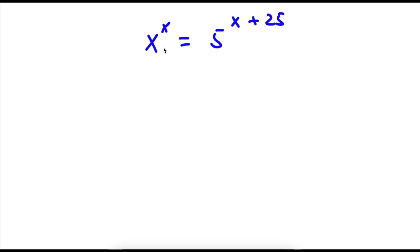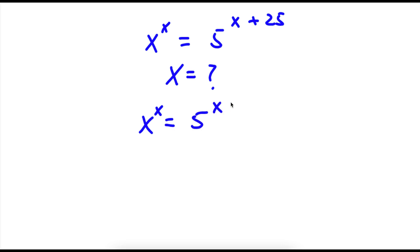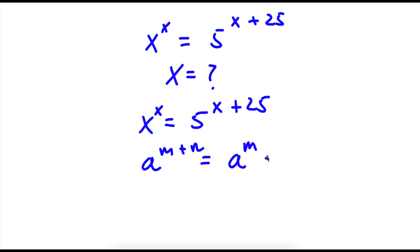Alright, so now we have x to the power of x is equal to 5 to the power of x plus 25. Now we want to find the value of x. From x to the power of x is equal to 5 to the power of x plus 25, if I have something in the form a to the power of m plus n, this is equal to a to the power of m times a to the power of n.